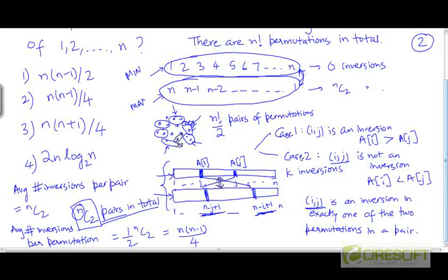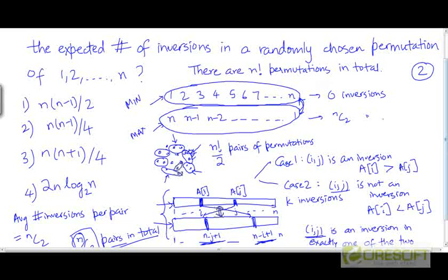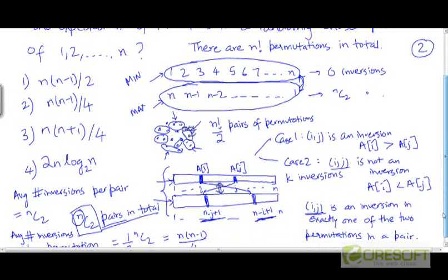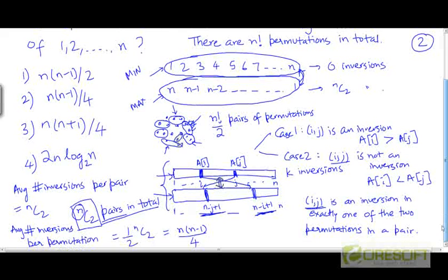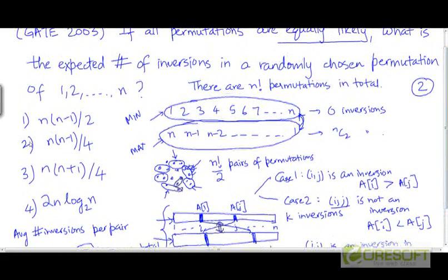So if we were to randomly pick a permutation out of the n factorial permutations, we can expect the number of inversions on average to be n times (n−1) divided by 4. Therefore, the second choice is the correct answer.